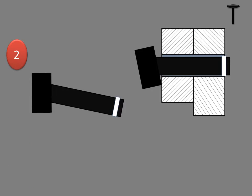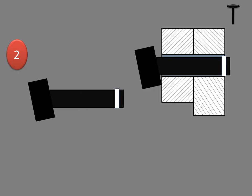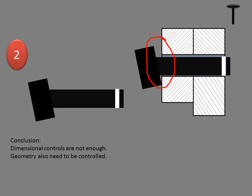In case two, by adjustment if we do assembly, there is still a problem. The conclusion is that dimensional controls are not enough. Geometry also needs to be controlled.